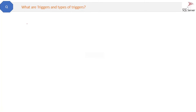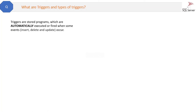Explain triggers and their types. Triggers are stored programs which are automatically executed or fired when some event occurs. For example, suppose you have a locations table that changes frequently and you want to track how many times and when these changes happen. You can create a trigger that will insert the history data into another table, location_history, whenever any change in the main table occurs — you do not need to manually write a query to insert the data.